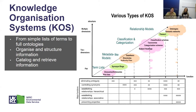The main functionalities we are trying to address are eliminating ambiguity in language, managing synonyms, establishing hierarchical relationships like term A is broader than or narrower than term B, or associative relationships like term A is related to term B, and at the most complex level attributing properties to objects. And this is what ontologies do, like term A has name term B.